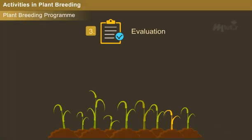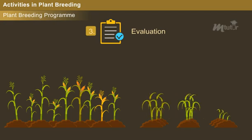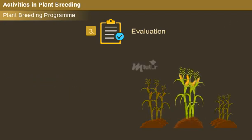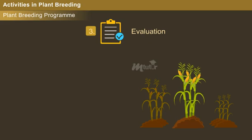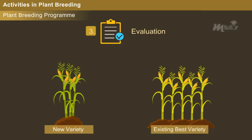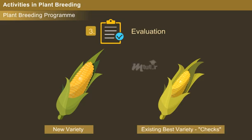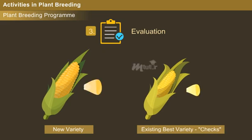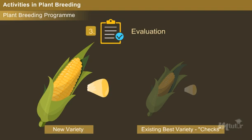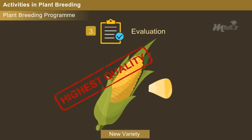Evaluation: This activity is carried out to evaluate the traits of newly selected lines, strains, or population of the cultivated breed. Basically, the performance of the new species is compared with that of the existing best varieties, generally known as Checks. If the developed variety is superior to Checks, it is notified and released as a new variety, and is also certified as the highest quality seed.